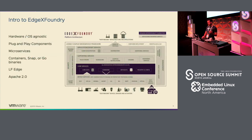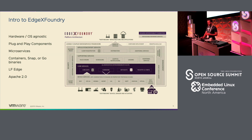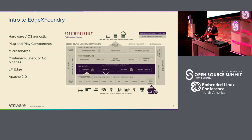So now let's go into EdgeX. It's supposed to be hardware and OS agnostic — any kind of OS. I run it natively on my Mac OS, obviously on a Raspberry Pi, and you can run it on x86. Dell sells those big Edge Gateways that you can run it on. It's plug and play — a bunch of microservices. You can replace them with anything, like your own rules engine, your own filtering system, your own devices.